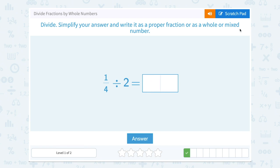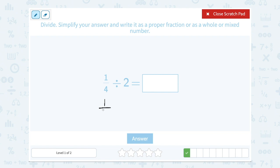1 fourth divided by 2. Okay, so our rule again is to multiply by the reciprocal. When you do that, the first fraction does not change, right?